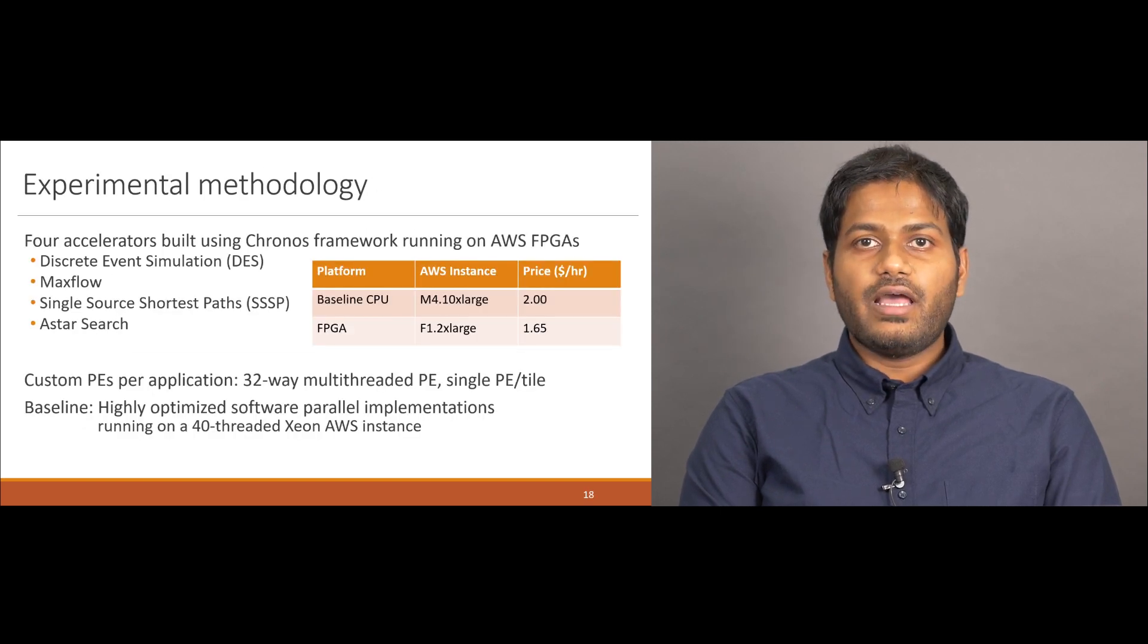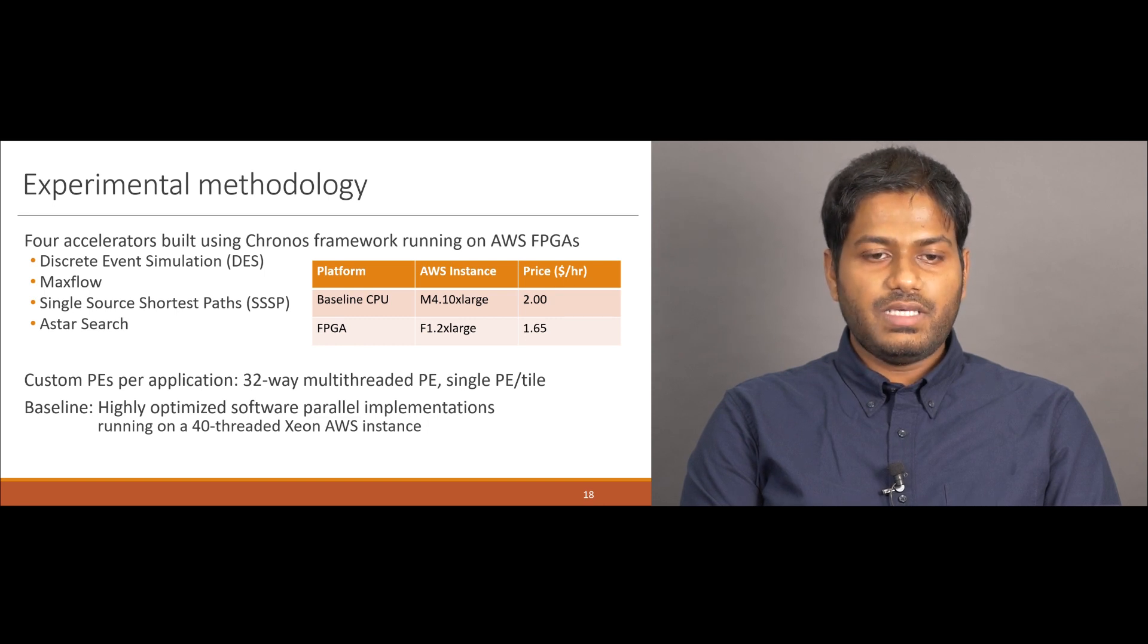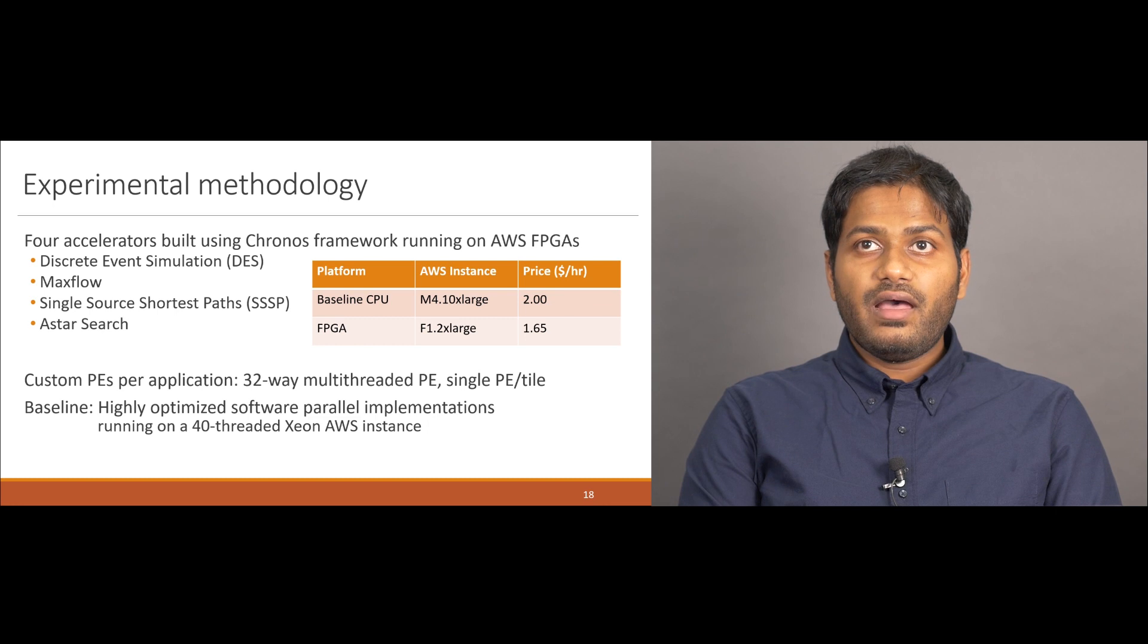We evaluate Kronos by building applications for four challenging applications and running them on the Amazon AWS FPGAs. We build accelerators for discrete event simulation, maxflow, single-source shortest path, and A-star search. For each application, we build custom PEs. Each PE is 32-way multi-threaded, and each tile has a single PE. We compare the performance of these accelerators against highly optimized software parallel implementations running on a 40-threaded Xeon AWS instance that is similar in price to the FPGA.